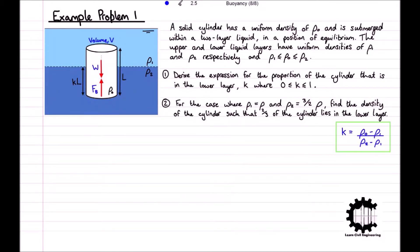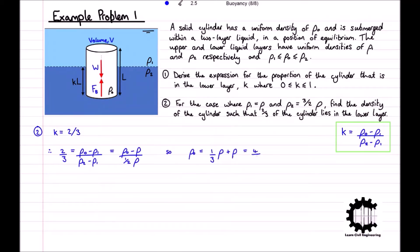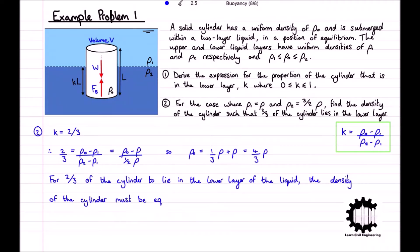Moving on to the second part, we are given rho_1 equals rho and rho_2 equals 3/2 rho, and we must find rho_0 such that two-thirds of the cylinder lies in the lower layer. Since k equals two-thirds, substituting into our expression: 2/3 equals (rho_0 minus rho) divided by (1/2 rho). Rearranging — multiplying each side by 1/2 rho and adding rho — gives rho_0 equals 1/3 rho plus rho, which equals 4/3 rho. Therefore, for two-thirds of the cylinder to lie in the lower layer, the density must be 4/3 rho.